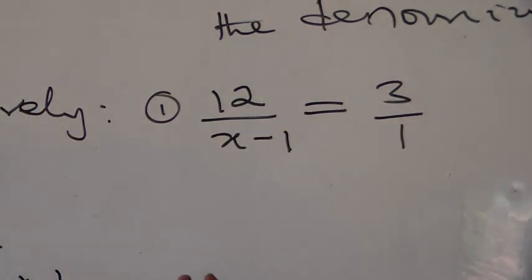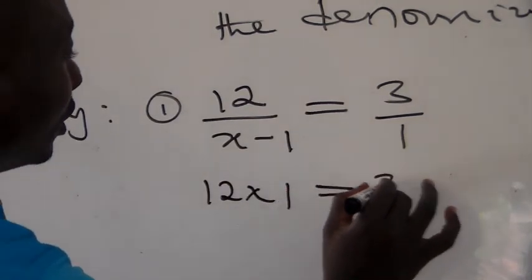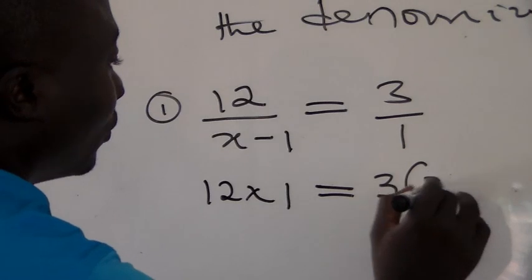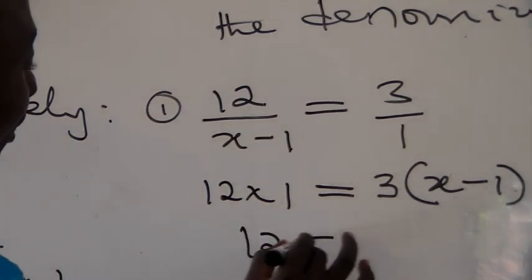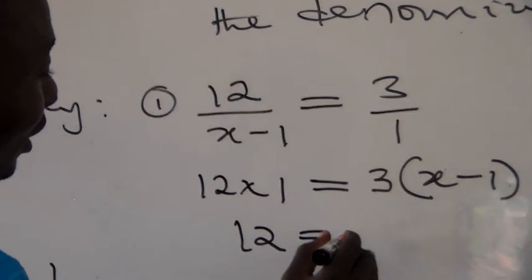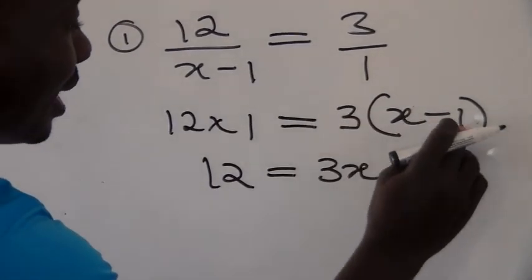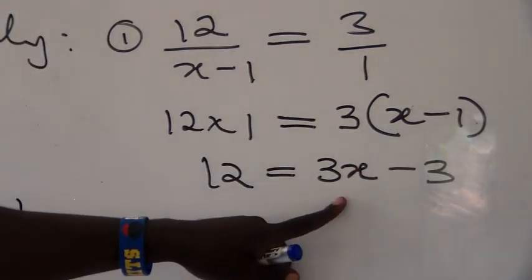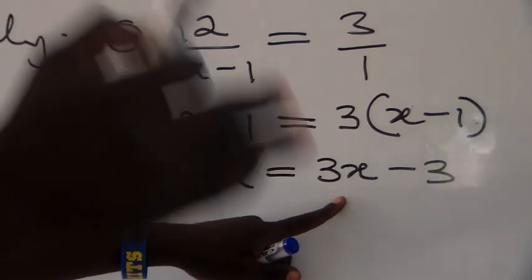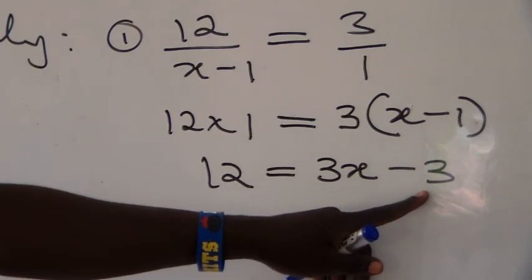We cross multiply: 12 multiplied by 1 equals 3 times (x minus 1). We expand the bracket: 12 equals 3 times x giving us 3x, and 3 times negative 1 giving us negative 3. So we have 12 equals 3x minus 3. We are looking for the value of x, and on the right-hand side we have x alongside a negative whole number.